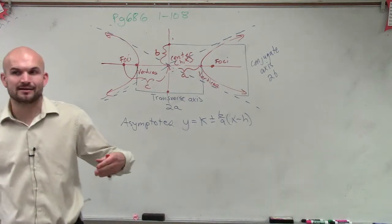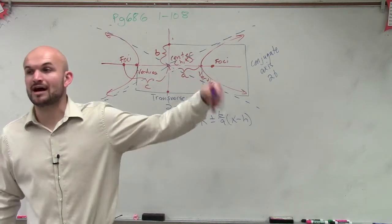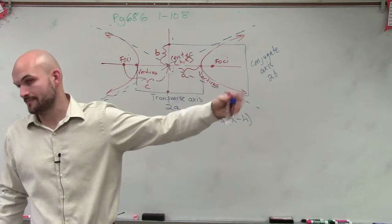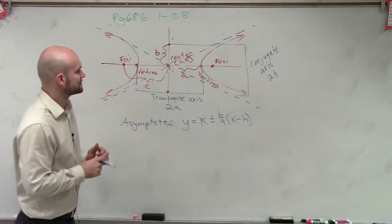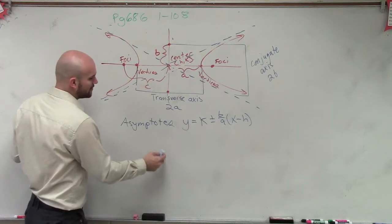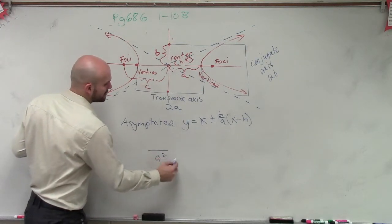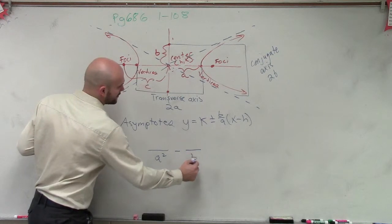Before, ladies and gentlemen, we had x squared minus h plus y squared minus k. So now, ladies and gentlemen, what we're always going to be doing is now you're always going to have a squared minus b squared.